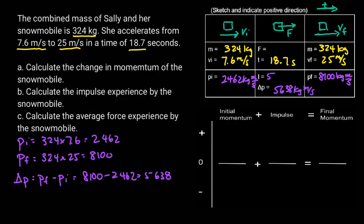The impulse will be the same because of the impulse-momentum theorem — those two are going to be equal. To calculate the force, we know that impulse is force times time, so the force is equal to the impulse divided by time.